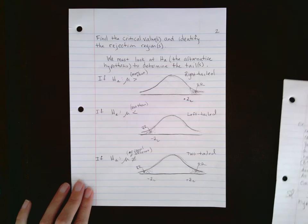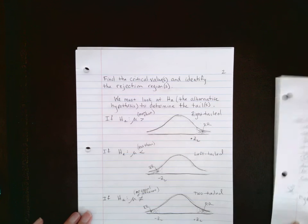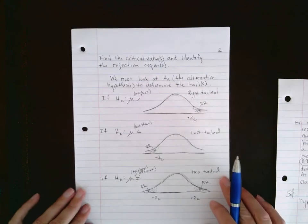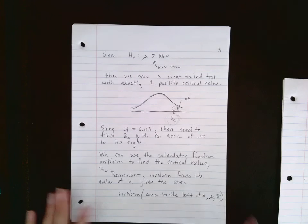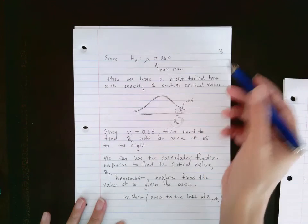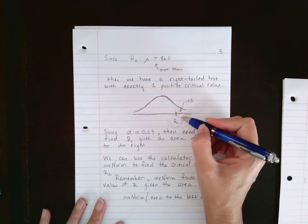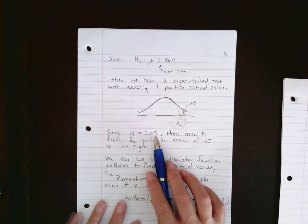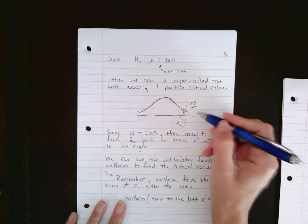Next, we want to find the critical values. To do that, you look at the alternative hypothesis. If it says 'more than,' it's going to be a right-tailed test. If it says 'less than,' it's a left-tailed test. If it says 'not equal to' or 'different,' then it's a two-tailed test. Since our problem has the alternative as 'more than,' I know it's a right-tailed test, which means there is exactly one critical value and that critical value is going to be positive. The alpha level we're given is 0.05, so I need to find a critical value with an area to its right of 0.05.